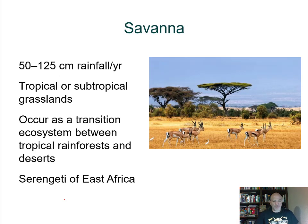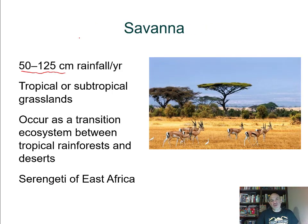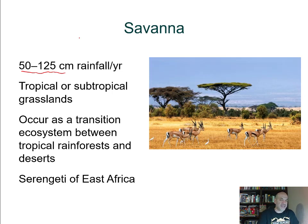Savannah is a step below rainforest — tropical grasslands with annual rainfall between 50 and 125 centimeters per year. Compare that to the minimum of 140 centimeters for rainforest. These are tropical and subtropical grasslands, occurring in the transition between tropical rainforest and desert. Examples include the Serengeti, home to zebras, gazelles, and lions. Locally, subtropical grassy areas like those found moving away from rivers here could also be described as savannah-type grasslands.